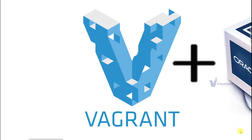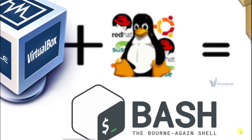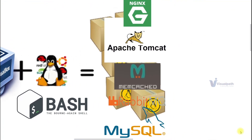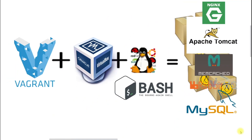Another design we have is for our automation stack. We will be using Vagrant to automatically set up our virtual machines. Vagrant is going to communicate with Oracle VM VirtualBox, which is the hypervisor, and automatically create virtual machines on it. Then we'll be using some bash scripts or bash commands to set up our services — Nginx, Apache Tomcat, Memcached, RabbitMQ, and MySQL. We will automatically create virtual machines from Vagrant for each of these services.